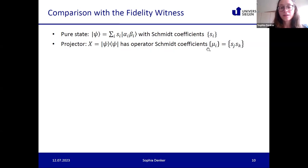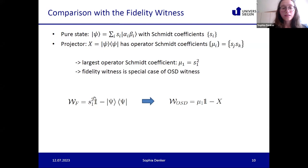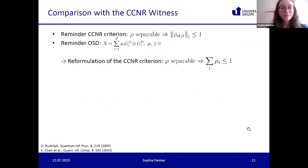The operator Schmidt coefficients mu_i are given by products of the vector Schmidt coefficients s_j and s_k, and consequently the largest operator Schmidt coefficient mu_1 equals the largest vector Schmidt coefficient squared, s_1^2. This shows that the fidelity witness is a special case of the OSD witness: choosing X to be the projector |psi><psi| makes s_1^2 equal to mu_1, recovering the OSD witness.